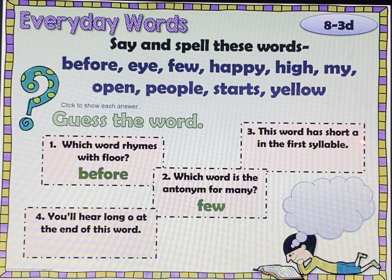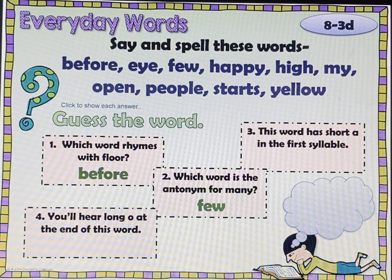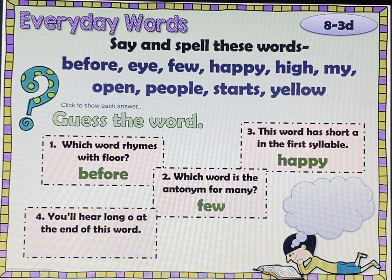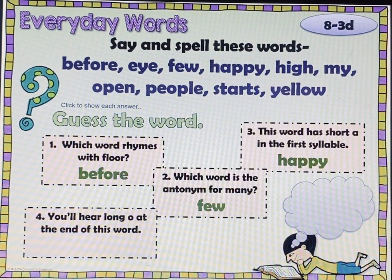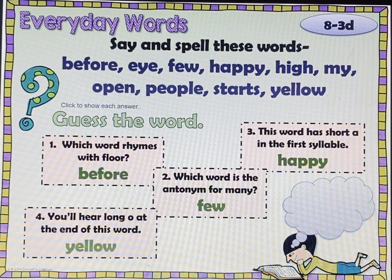This word has a short A in the first syllable. Check, pause, play. You should have got 'happy.' That short A is in the first syllable — if we divide it between the two P's, we have 'hap,' so it's in the first syllable. Number four: you'll hear a long O at the end of this word. Which one of these words has an O sound at the end? Check, pause, play. You should have picked 'yellow.' Yellow — do you hear the long O? Yellow O.